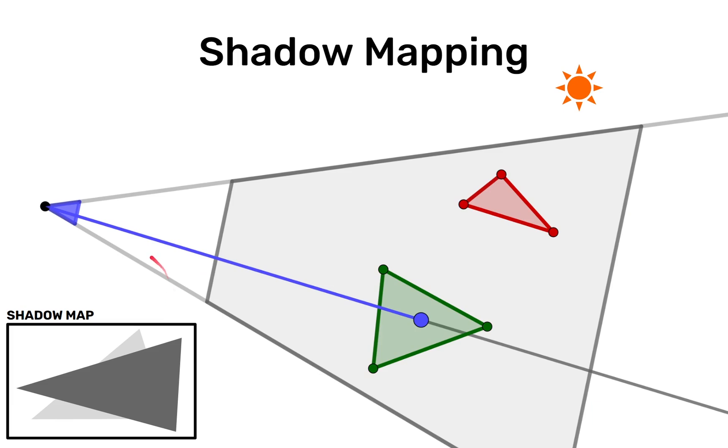Next we're going to render our scene from the regular camera. So our regular scene camera is rendering the scene and let's look at what happens when we're rendering this fragment on the green triangle.